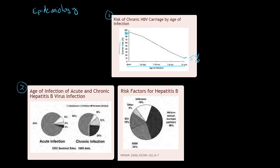This interesting statistic showing how newborns are at highest risk for getting chronic hepatitis B can be seen here. Those with acute infection tend to be majority adults. With chronic infection, again majority adults, but the second biggest group comes from those newborns and those in the perinatal period, because those people are much more likely to convert from acute to chronic.